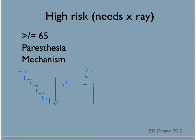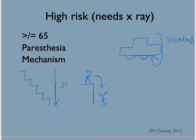Axial loading, such as diving. High-speed motor vehicle collision over 100 km per hour, those involving rollover or ejection. A bicycle or motorized recreational vehicles, such as all-terrain vehicles. Patients with any high-risk factors need to have at least an x-ray of their cervical spine.